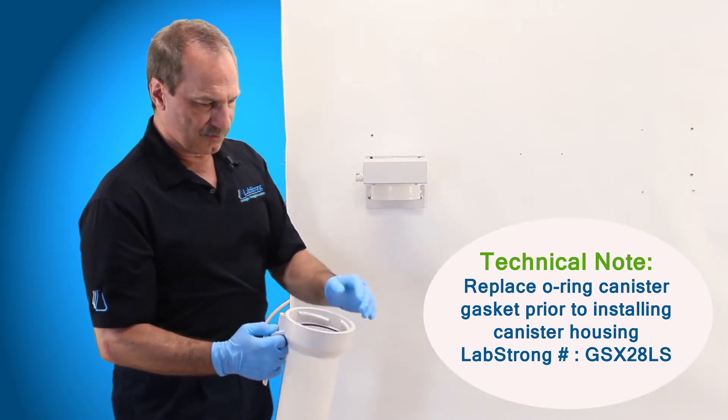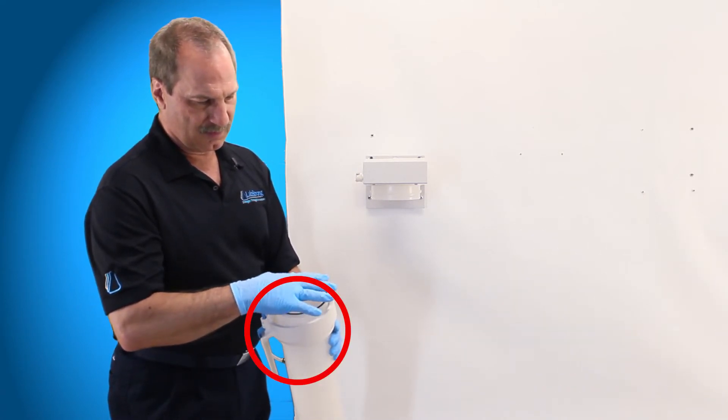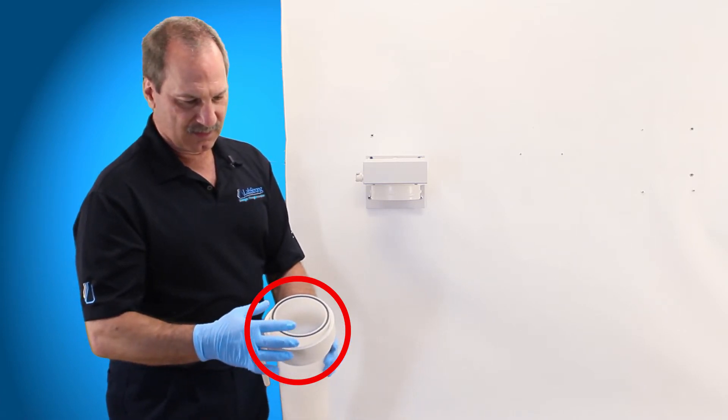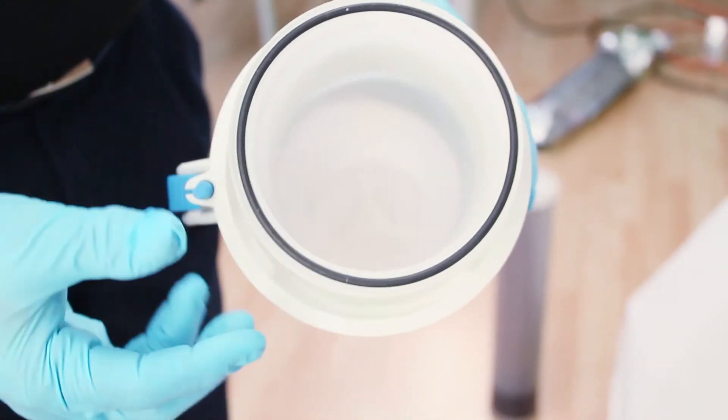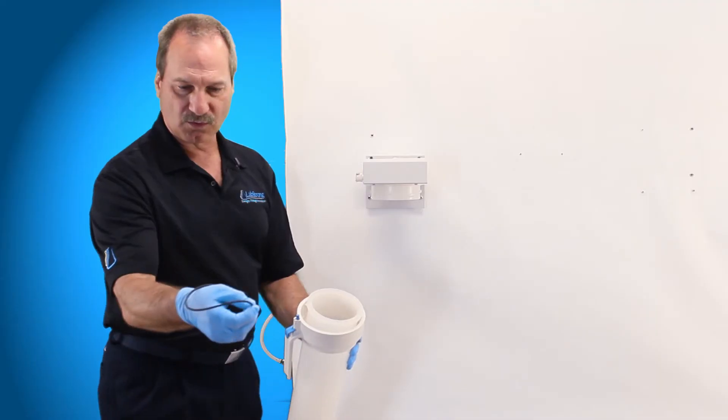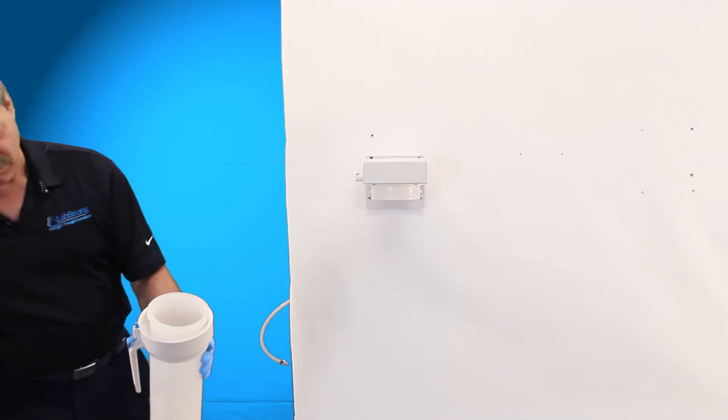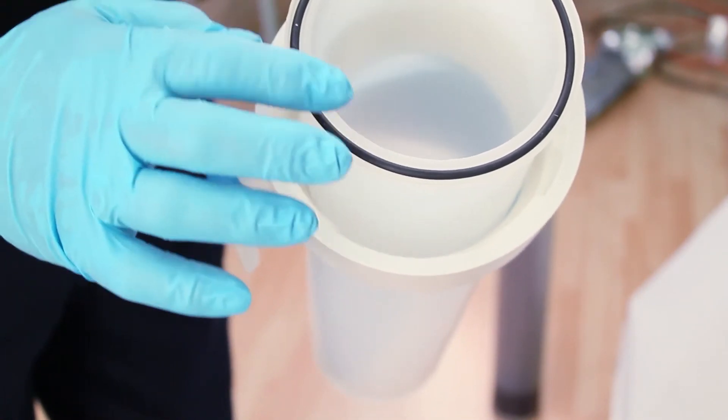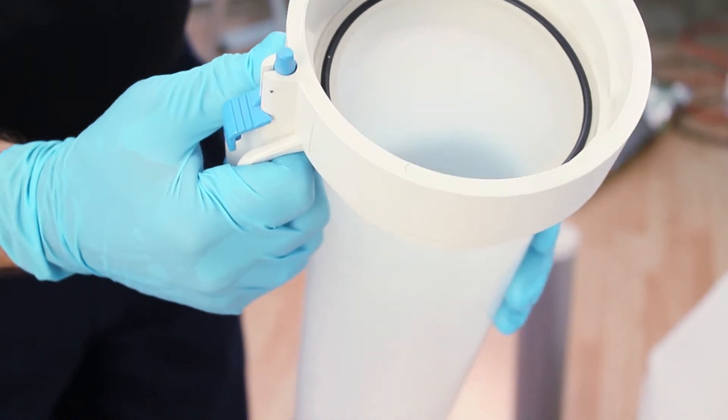You want to make sure that with the cartridge you get an O-ring. This is a GSX-28LS. You want to take out your old O-ring, grab your new O-ring, put it inside the groove. There is a groove in this canister. You want to make sure it stays in that groove.